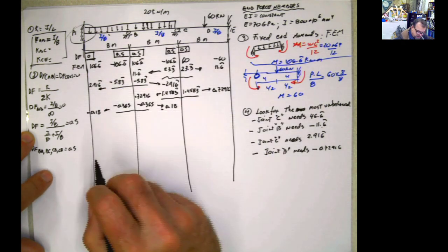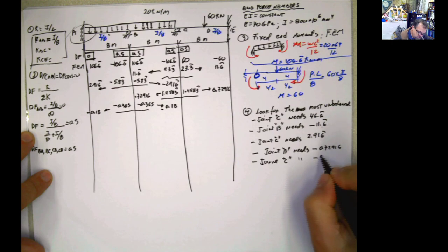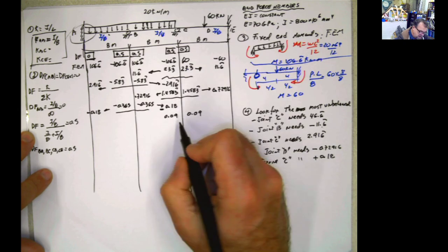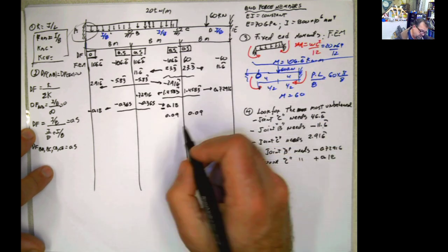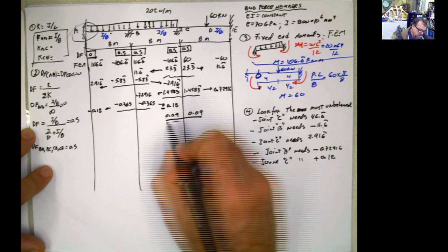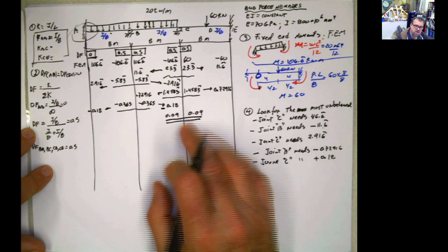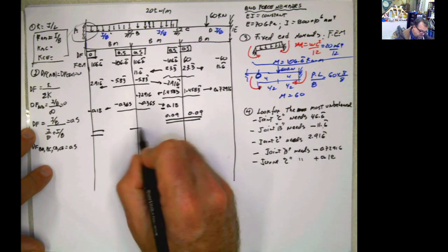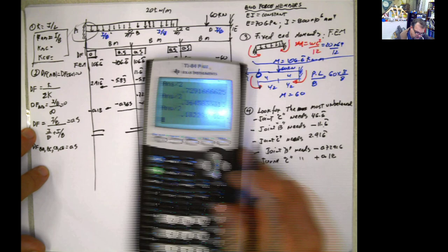Joint C needs positive 0.18 again, giving 0.09 on each side. These values are really small now, so I'm going to consider the error very, very small and lock this joint, stopping the iteration. When the amount needed for balancing is that small, that's sufficient. Now you add everything column by column — that will be our fifth step.